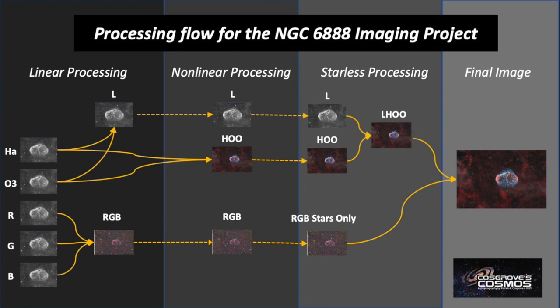Now that we've captured our data and pre-processed it, we have our HA, oxygen 3, red, green, and blue master linear images, and we can start our post-processing. I wanted a way of conveying the flow for this particular image, so I created this chart. It shows how images flow through the linear processing domain, the non-linear processing domain, the shift to the starless processing arena, and how things are brought together to create the final image.